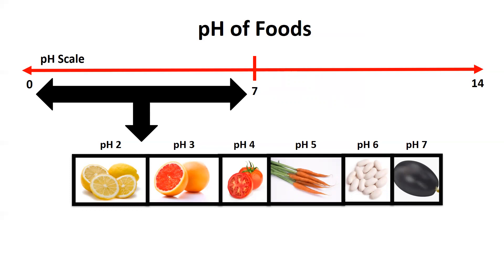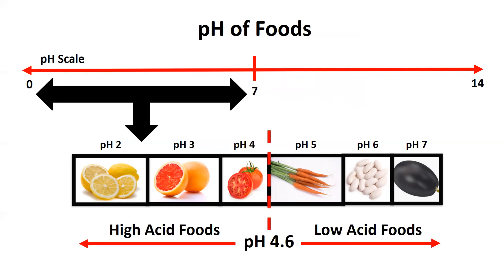When we talk about high acid and low acid foods, we have a different dividing line for what defines a high acid and a low acid food, and that is pH 4.6. This is because at a pH of 4.6 or below, the spores of Clostridium botulinum are not able to germinate and produce toxin. At a pH above 4.6, Clostridium botulinum spores can germinate and grow.